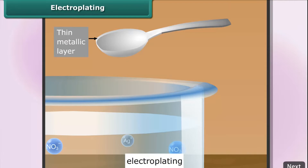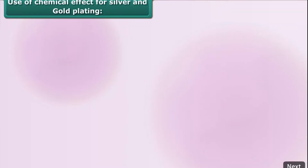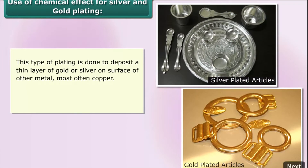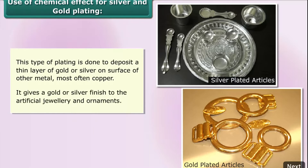This process uses the chemical effect for silver and gold plating. This type of plating is done to deposit a thin layer of gold or silver on the surface of another metal — most often copper. It gives a gold or silver finish to artificial jewelry and ornaments, producing silver-plated and gold-plated articles.